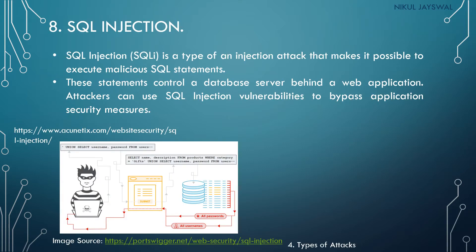SQL injection is a code injection technique. We store data in a database and access it using SQL — using various SELECT queries and UNION queries. There is one application program called the front end and a database called the back end. We access data from the database through the application program. In SQL injection, we put one SQL statement into the application program to access data from the database.